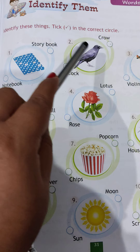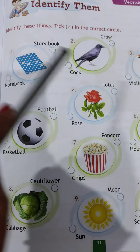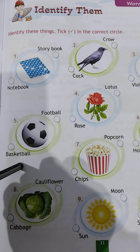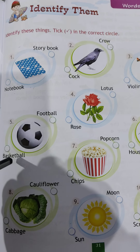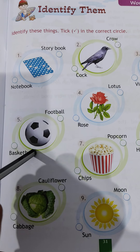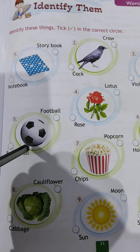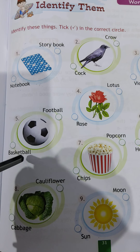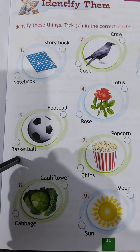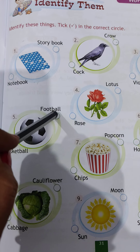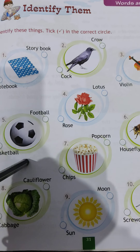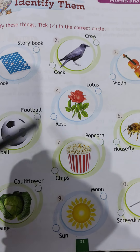You will see a variety of things in this book. You have to identify each picture and tick the correct circle. For example, if there is a picture of a ball, you identify whether it is a basketball or a football.